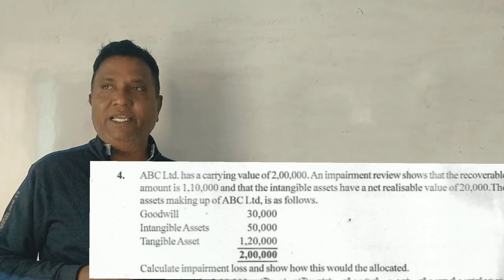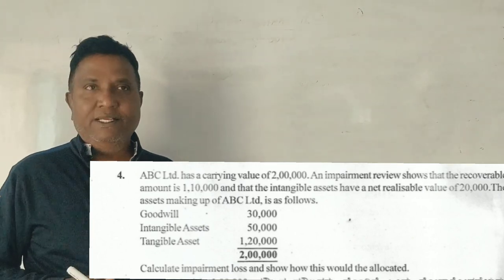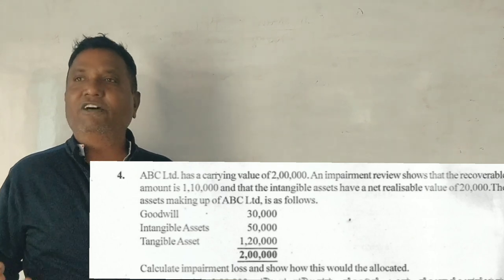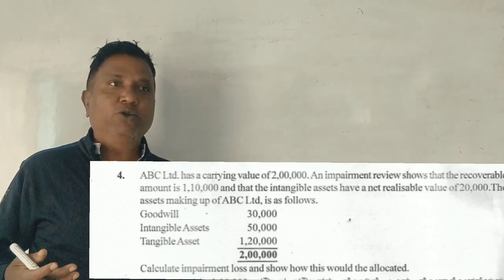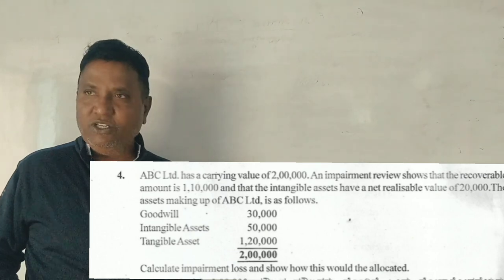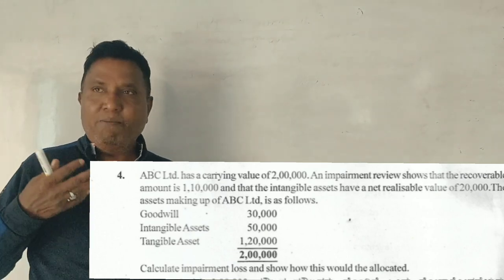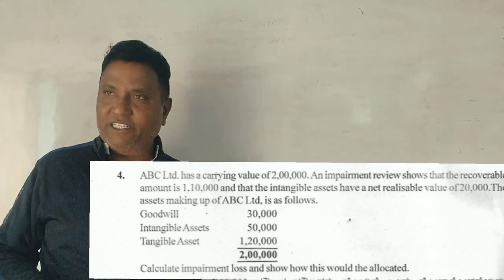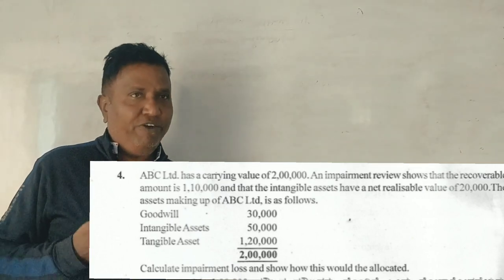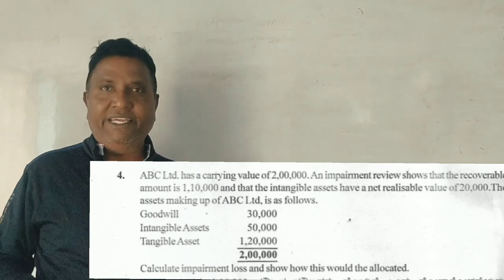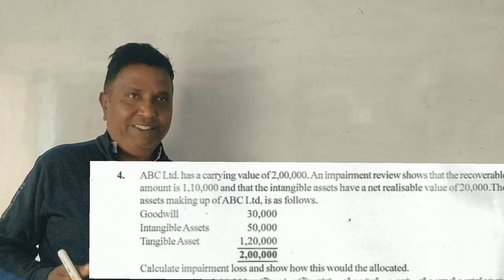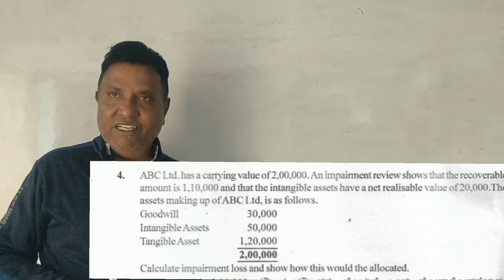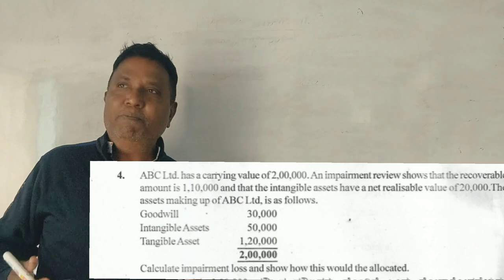What is impairment? It is a reduction in the value of the asset. When an asset is used continuously, there will be depreciation — naturally the asset value decreases. That is not an impairment. So what is an impairment?